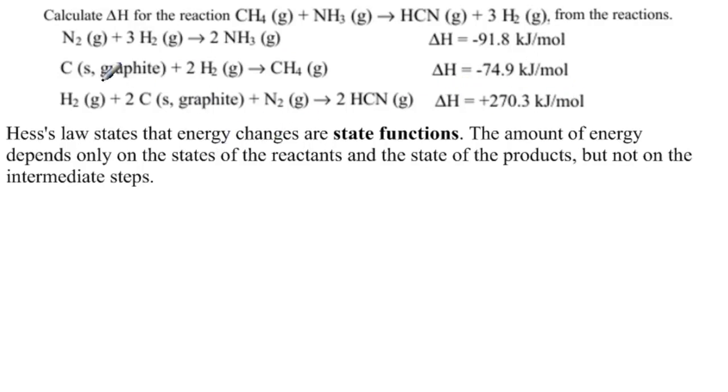So what's key here? NH3. NH3 is on the wrong side and there's two of them, so we need to multiply by minus one half. So we're going to multiply this by minus one half.